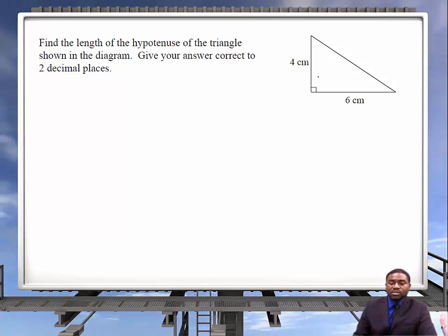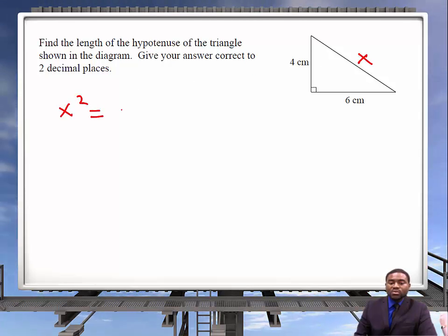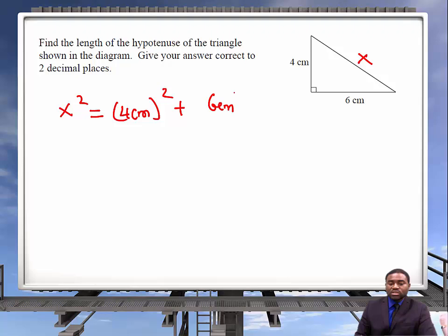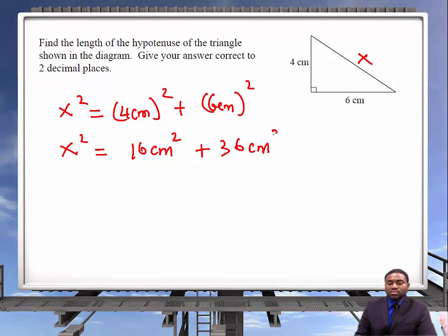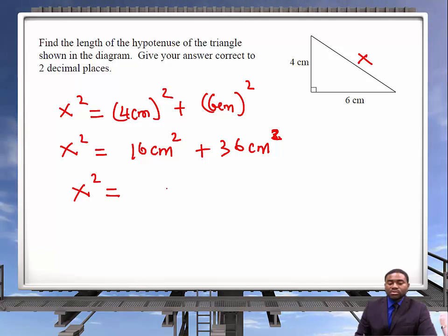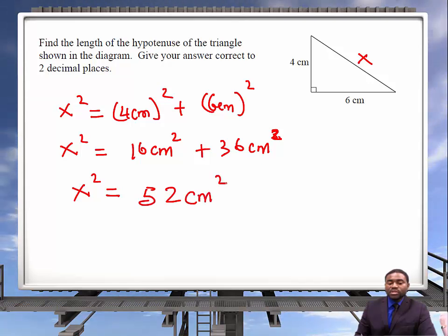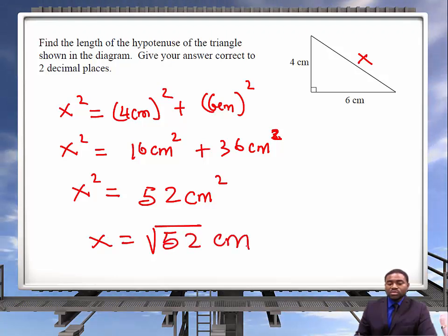Let's do an example. Find the length of the hypotenuse. If the hypotenuse is X, therefore X squared will be equal to 4 centimeters squared plus 6 centimeters squared. X squared will be equal to 52 centimeters squared, and X will be equal to the square root of 52 centimeters.